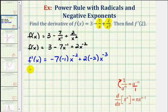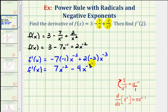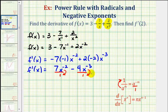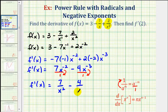Simplifying, f prime of x equals positive 7x to the power of negative 2 minus 4 times x to the power of negative 3. Rewriting using positive exponents: moving x to the negative 2 down to the denominator gives x squared, and moving x to the negative 3 gives x cubed. So our derivative function f prime of x can be written as 7 divided by x squared minus 4 divided by x cubed.